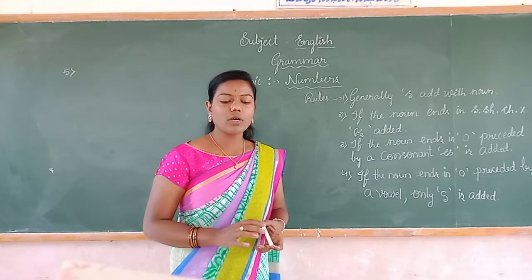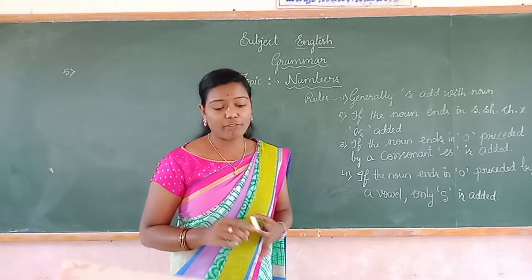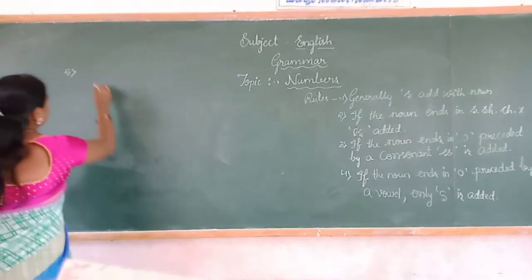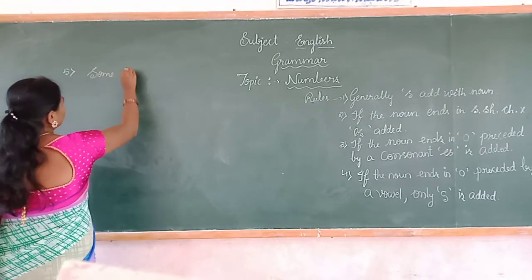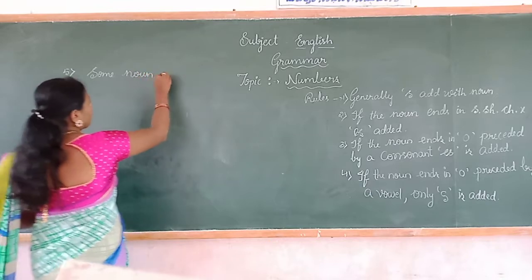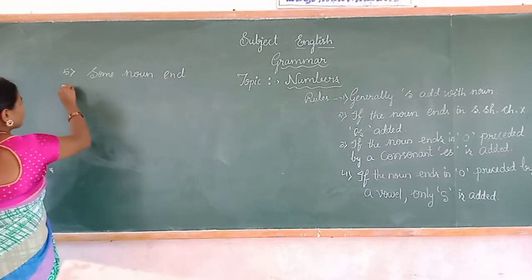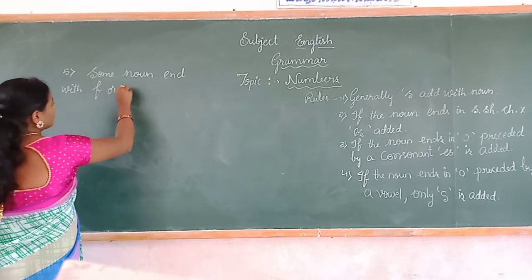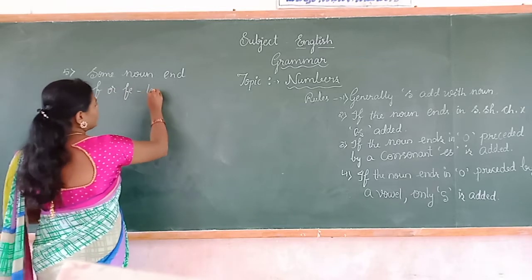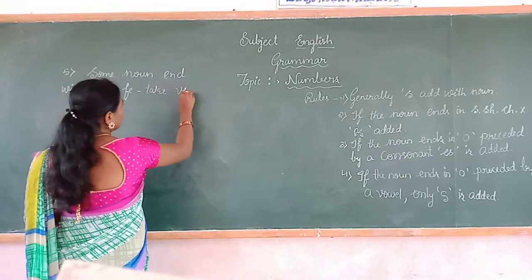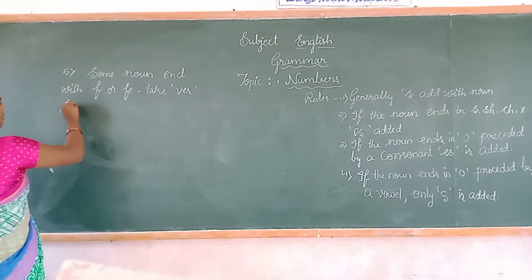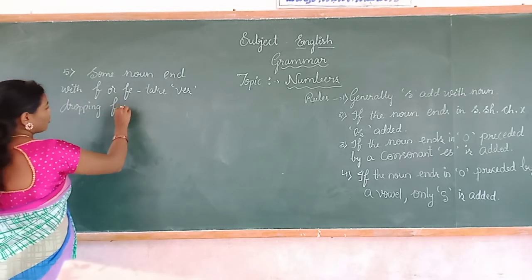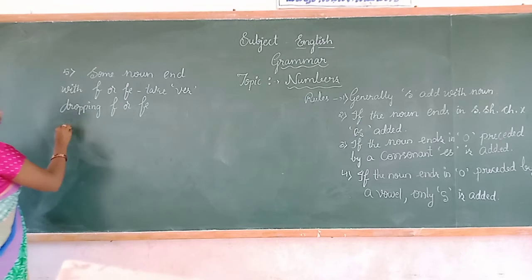Rule number 5: some nouns ending in F or FE take VES, dropping the F or FE in plural form.